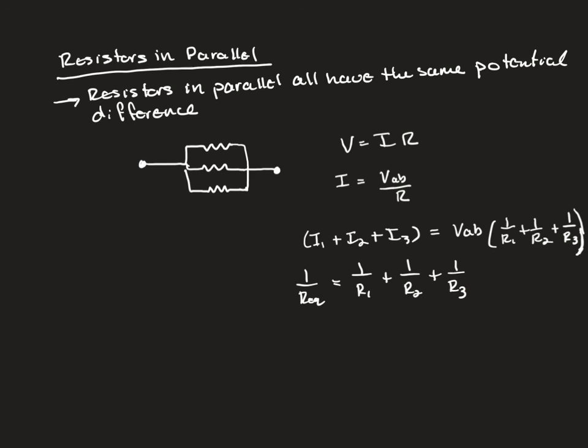So once again, we have an inverse relationship here. Remember, this is reversed from capacitors. Capacitors in series, you do the inverse rule. Resistors in parallel, you do the inverse rule. And once again, please be careful, when you do 1 over R1, plus 1 over R2, plus 1 over R3, you have to take the inverse of that to solve for the equivalent resistance.